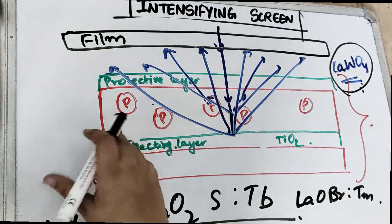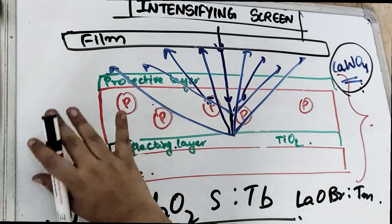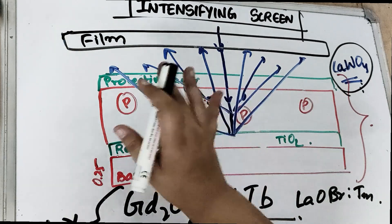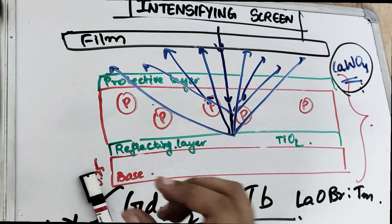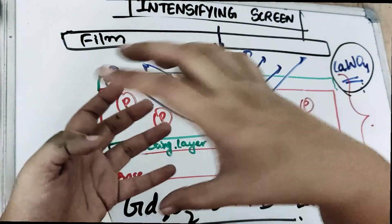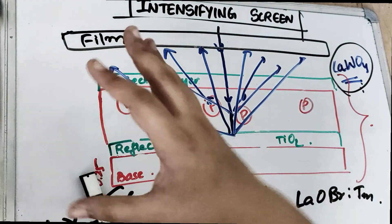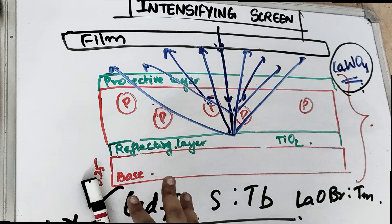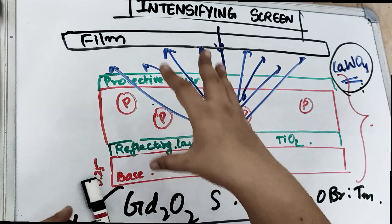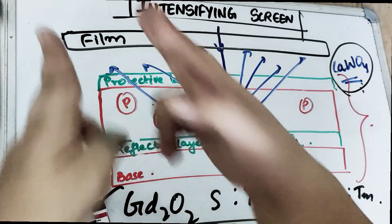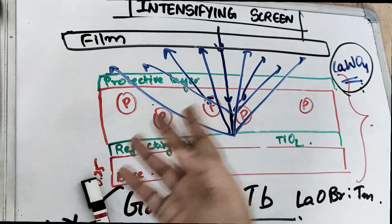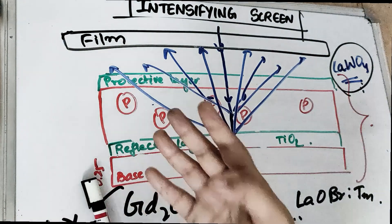So if the screen is dirty, there will be spots on the image. To protect it — I know you will say the protective layer is there, but it is not going to protect from dust, debris, or scratches. So we are going to keep it in a cassette. Like the old radio cassette had a box with a cassette inside, we have a cassette for the intensifying screen. But unlike the radio cassette which had one cassette per box, here in one cassette we have two intensifying screens — one on each side — so that exposure can occur on each side.